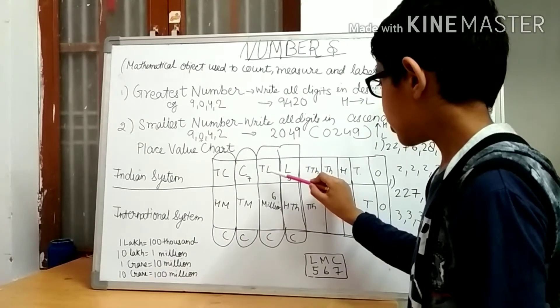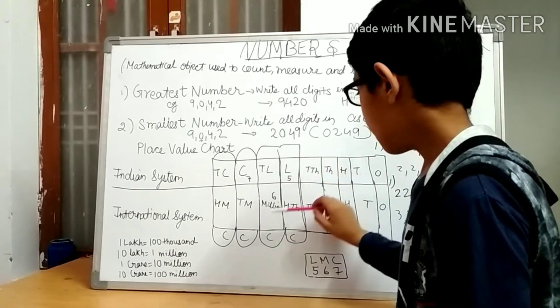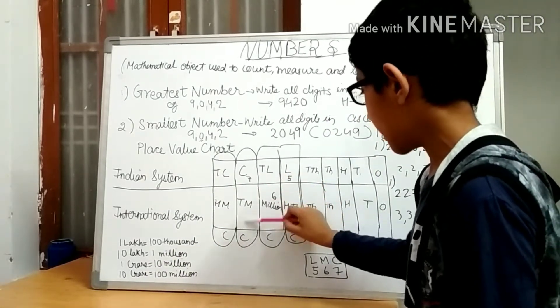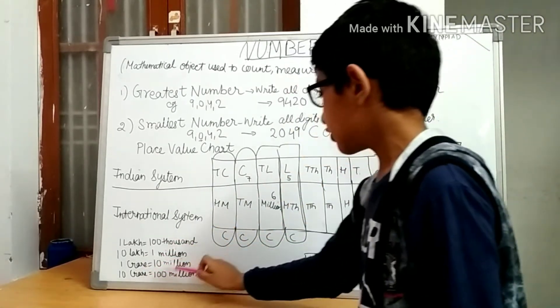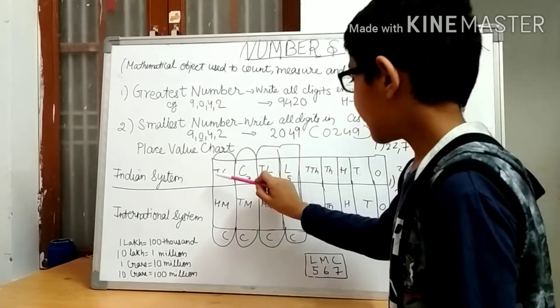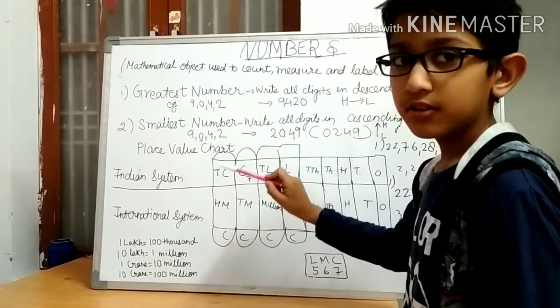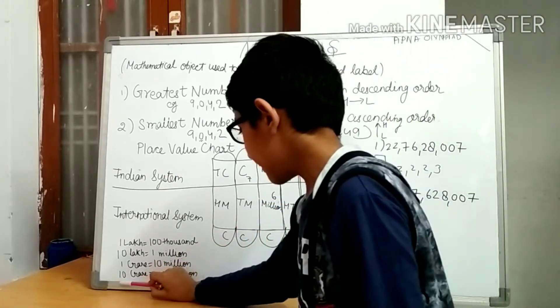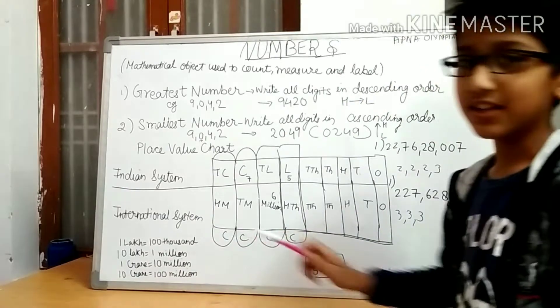Then in place of crore we have 10 million. In place of crore we have 10 million.